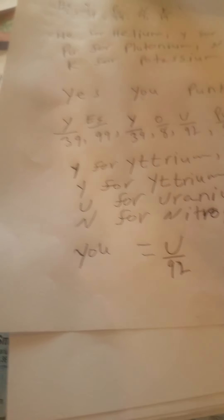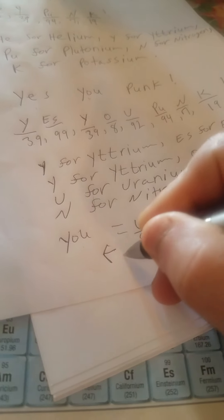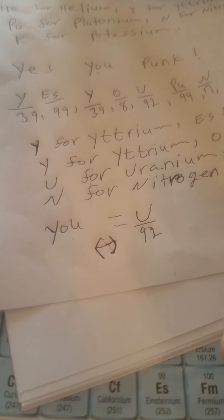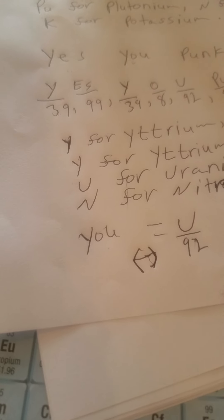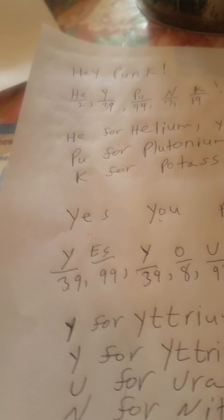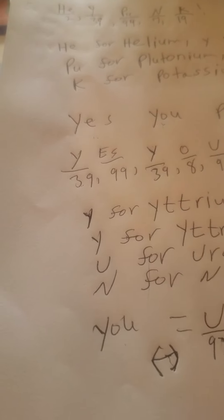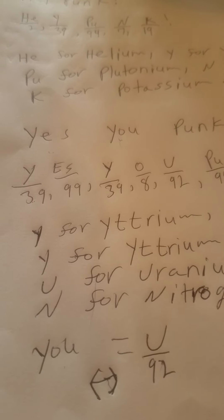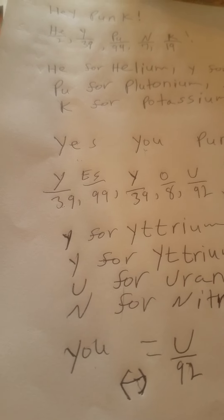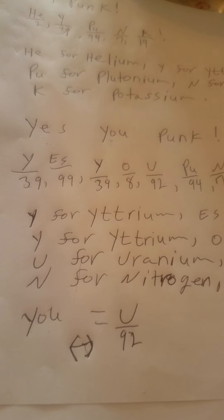It works both ways — you can put an arrow going both directions: 'you' equals capital U, and capital U equals 'you.' So 'Hey punk!' — another way to remember the table of elements. Have a good day! This is the Wise Owl. Please go to the description box below — I'll rewrite this neater and try to simplify it a little bit more. Over and out, good day, bye!